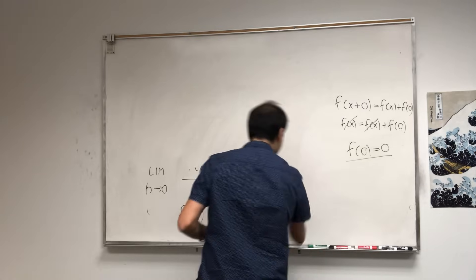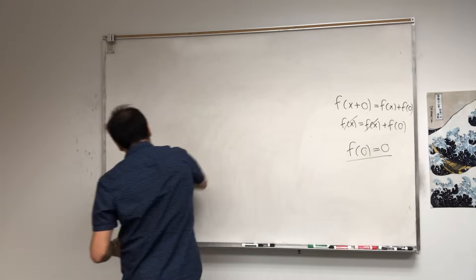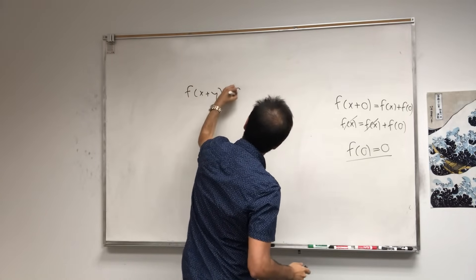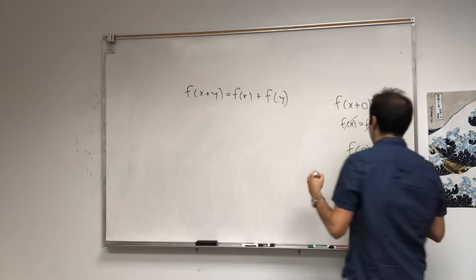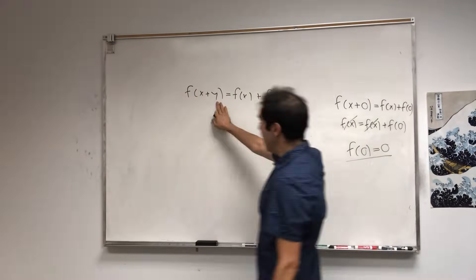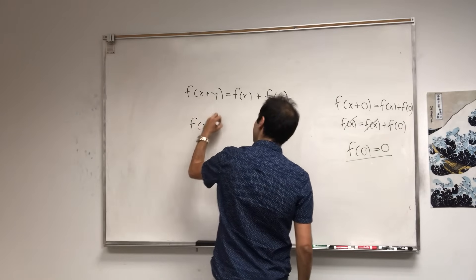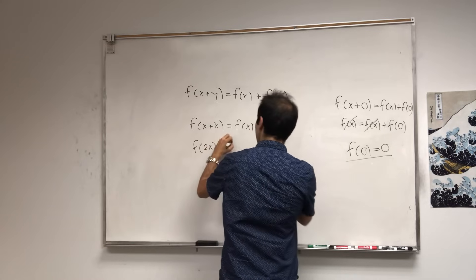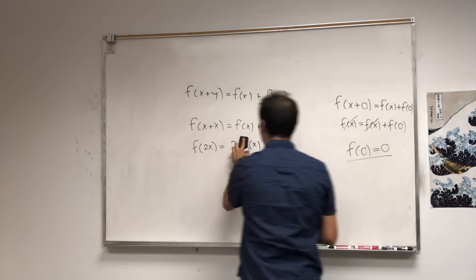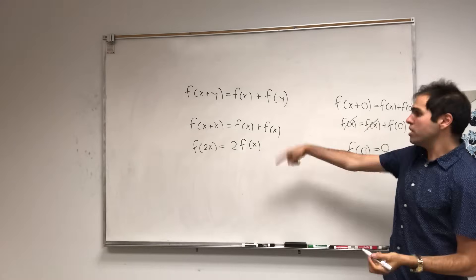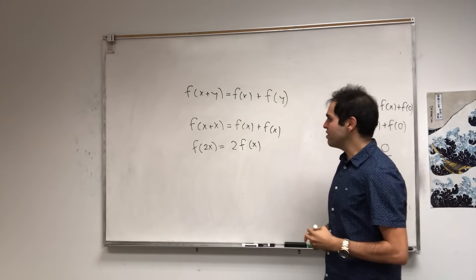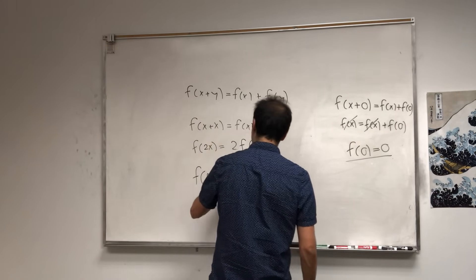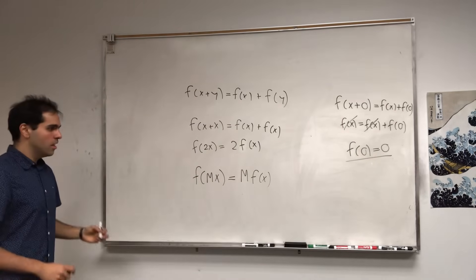It turns out we still reach the same conclusion. Suppose f(x+y) = f(x) + f(y). It's still true that f(0) = 0. Now let y = x: f(x+x) = f(x) + f(x), so f(2x) = 2f(x). You can continue and find f(3x) = 3f(x), f(4x) = 4f(x). So for positive integers, f(mx) = m·f(x).